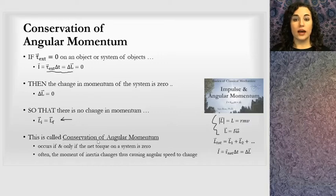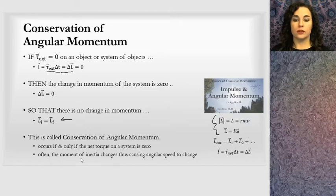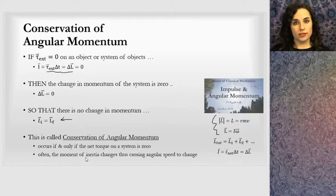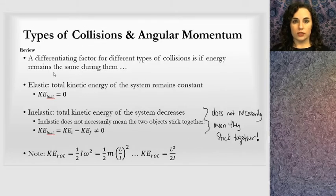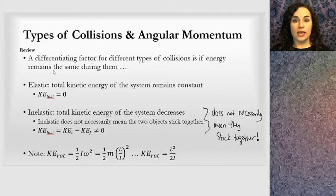This is called conservation of angular momentum and occurs only if the net torque is equal to zero. Often what you'll see in this situation is that the moment of inertia will change for a system of objects, therefore causing a change in angular speed. Just like we looked at different types of collisions with linear momentum, the same concept applies for conservation of angular momentum.